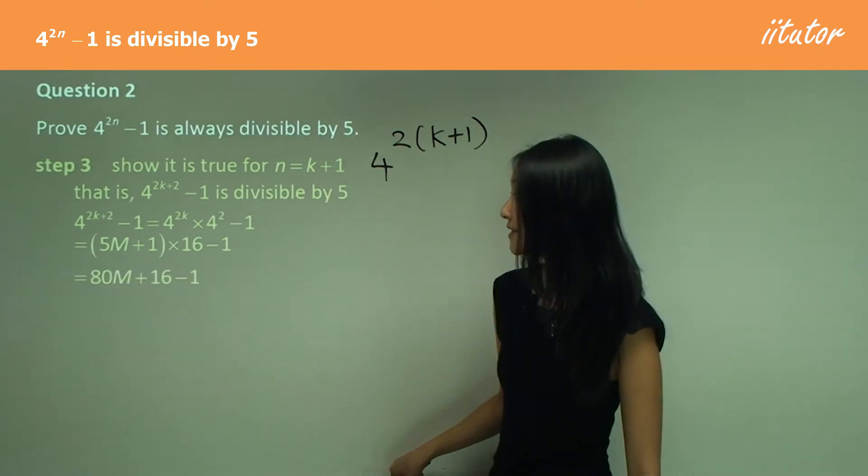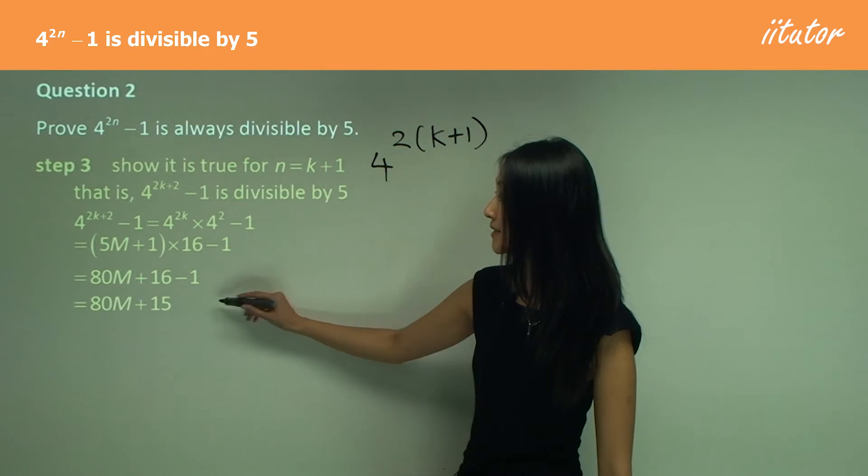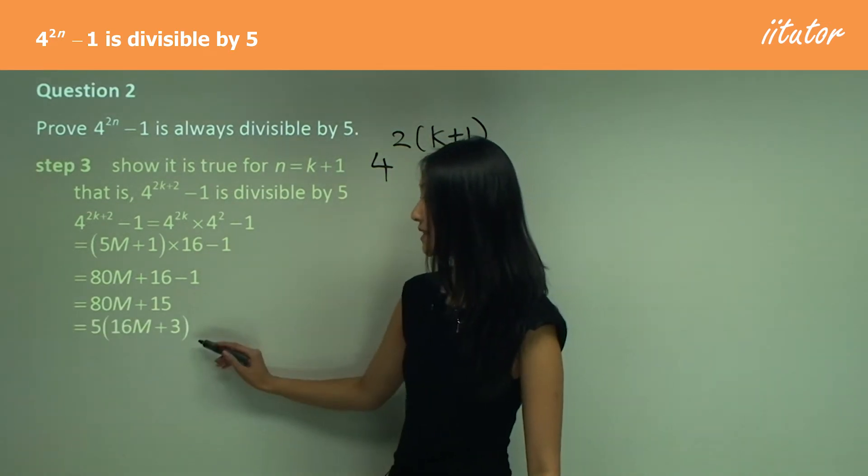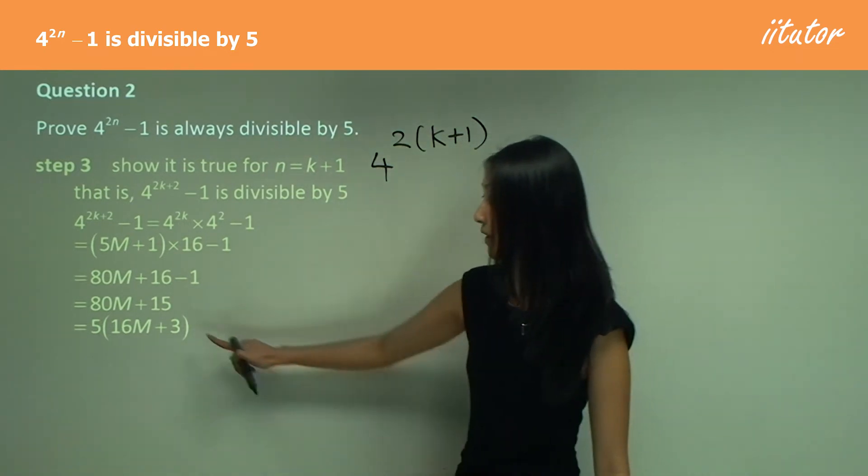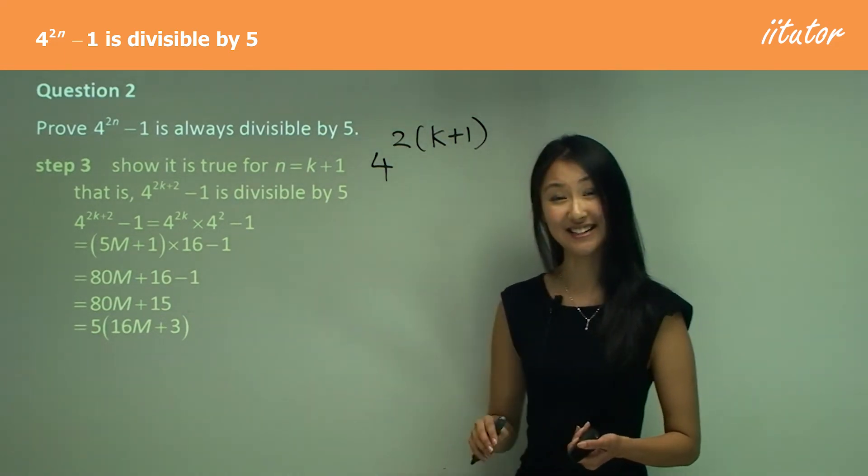So 16 times 5 just gives me 80m plus 16 minus 1 equals 80m plus 15. And I can factorize out 5, which leaves me with 16m plus 3. Now remember how I said I want to check if this is an integer? Well, there's no fraction or decimals there, so I can assume yes, that is an integer. This is divisible by 5.